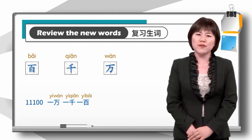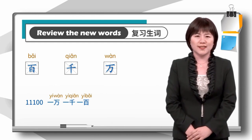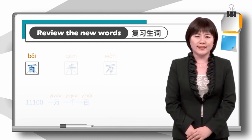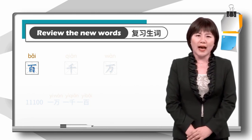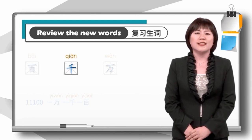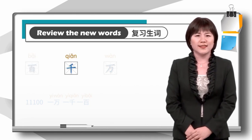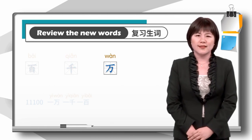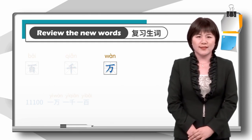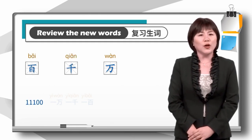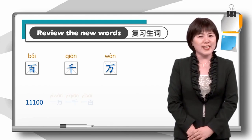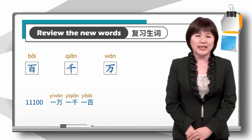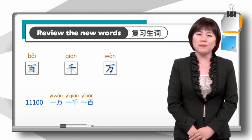OK, let's review the new words: 百，千，万。How to say this number in Chinese? 一万，一千，一百。